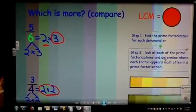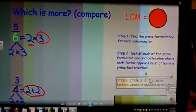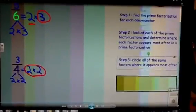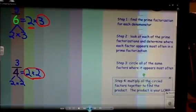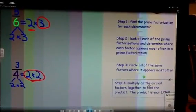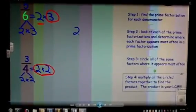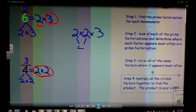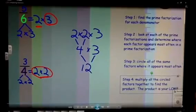Now, time to look at the next step. Step number three: we circled all the factors where it appeared most often. In step number four, we are going to multiply all the circled factors together to find the product, and the product will be our least common multiple. So I take two times two times three. This is four, and four times three is equal to twelve.